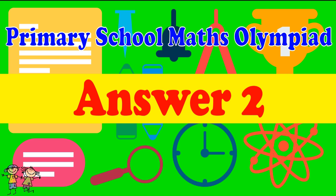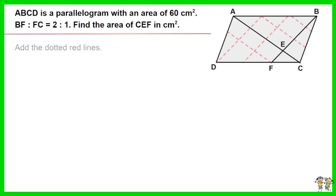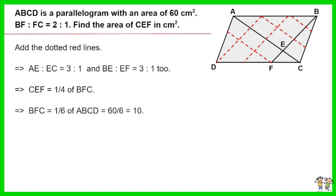Answer for question 2. Add the dotted red lines. With the red lines, the diagram shows that the ratio of AE to EC equals 3 to 1, and BE to EF equals 3 to 1 too. As such CEF equals one quarter of BFC and BFC equals one sixth of ABCD equals 60 divided by 6 which gives a result of 10. Thus CEF equals one quarter of 10. The answer is 2.5 centimeters squared.